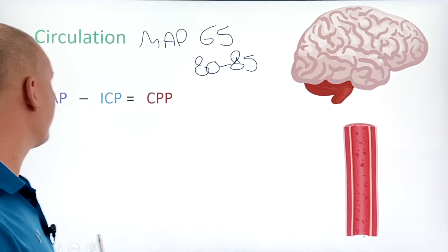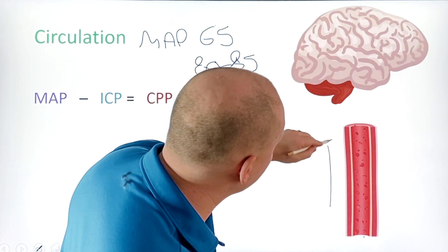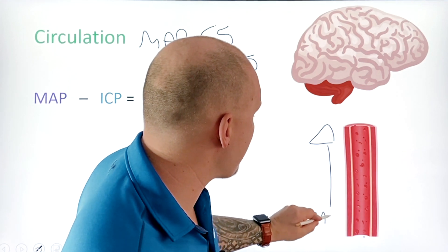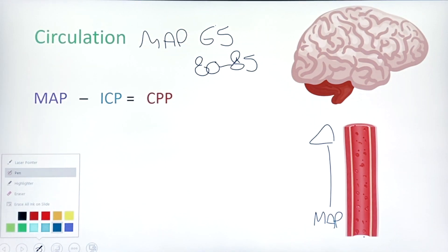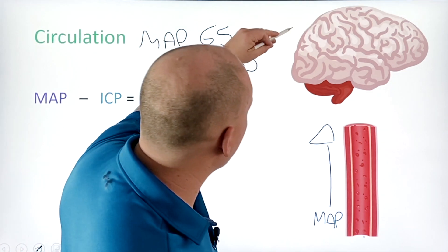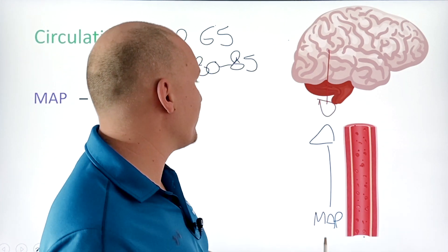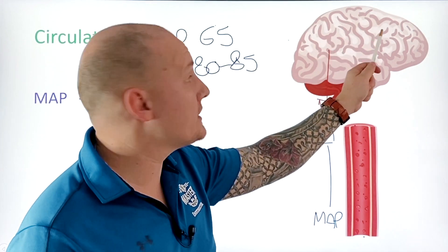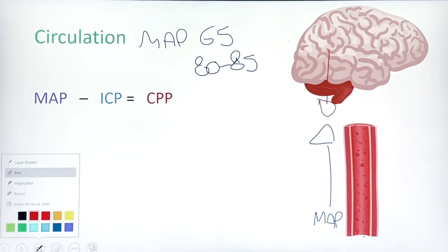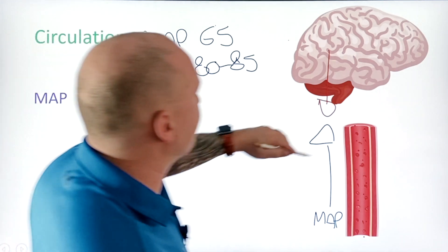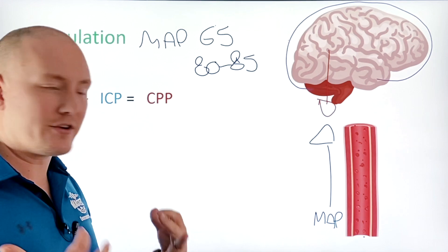Let's explain why that is. We have a mean arterial pressure — that's flow coming towards the brain, that's your MAP. Then you have your ICP, or your intracranial pressures. Your intracranial pressures are essentially the pressure that's pushing back on this mean arterial pressure trying to go into the brain itself. That's your ICP. Then you have your cerebral perfusion pressure — that's essentially the perfusion pressure inside the brain itself that allows for constant perfusion.